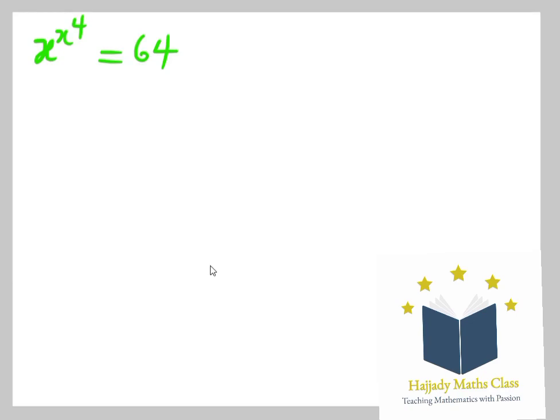We have x raised to power x raised to power 4 equals 64. So the first step for us to do here in solving for x is to raise both sides to the power of 4.